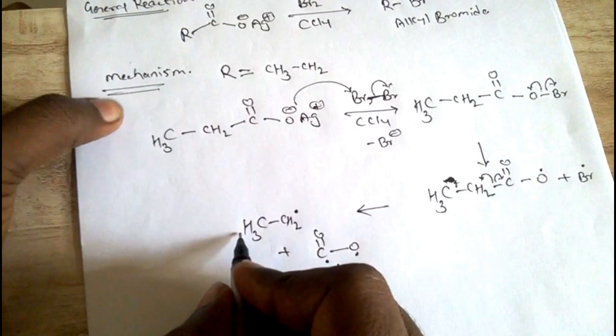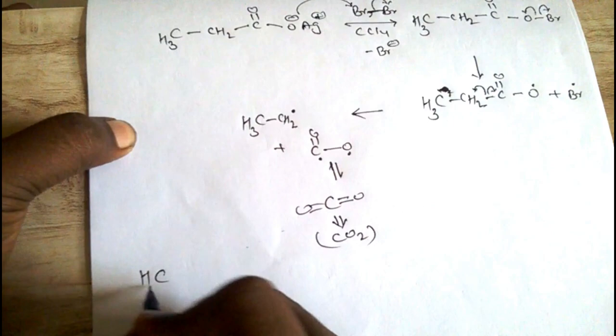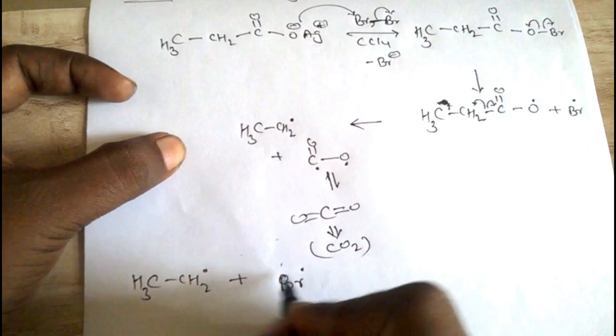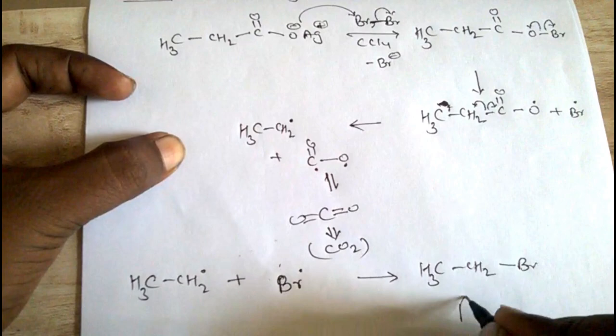We get this and again this reacts. CH₃CH₂• reacts with this Br radical, and we get CH₃CH₂Br. This is alkyl bromide.